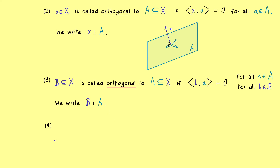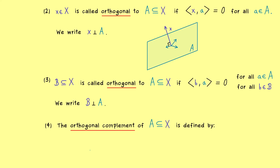The last definition of this video is the so-called orthogonal complement, which can be defined for any subset in X. In short, the orthogonal complement consists of all vectors in X which are orthogonal to the subset A. The common notation is to use the perpendicular sign as a superscript for A. We just take all the vectors in X which satisfy that they are orthogonal to A — meaning the inner products of x with all a all vanish.